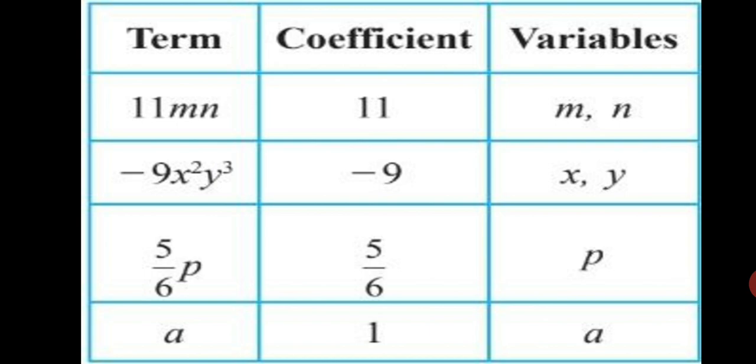Next, minus 9x square y cube. Coefficient is minus 9 and variables are x, y. Term 5 upon 6p. 5 upon 6 is a coefficient and p is the variable.